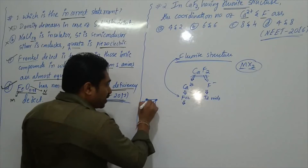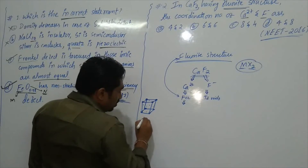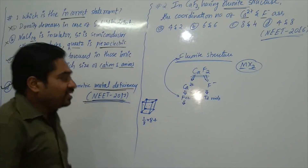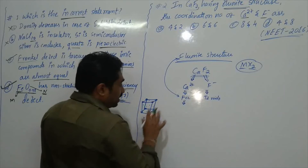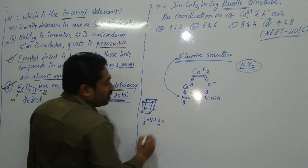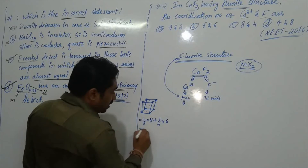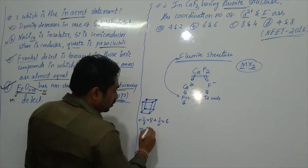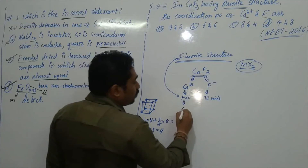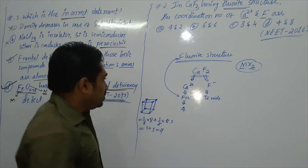The contribution of particles at the corner is 1/8 × 8 corners, and the contribution of particles at each face is 1/2 × 6 faces. So the number of particles in one FCC unit cell equals 1 + 3 = 4. This means four calcium ions are present in one calcium fluoride unit cell.